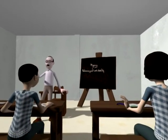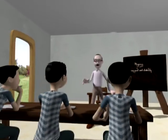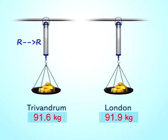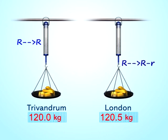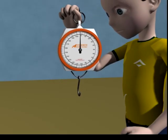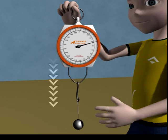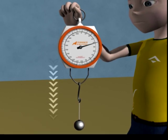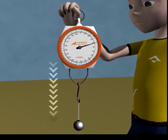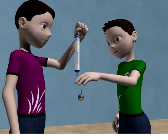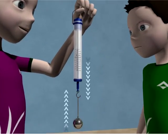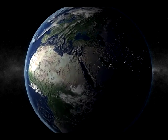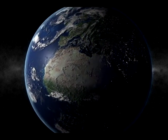This explains the variation in weight between Trivandrum and London. The value of R is greater at London, so the object is weighed more on a spring balance. When an object is suspended from the hook of a spring balance, it undergoes a gravitational pull and the spring extends depending upon that pull — this force is what is measured. When taken to different parts of the earth, this force will be different, and therefore the weight of the object will also be different.